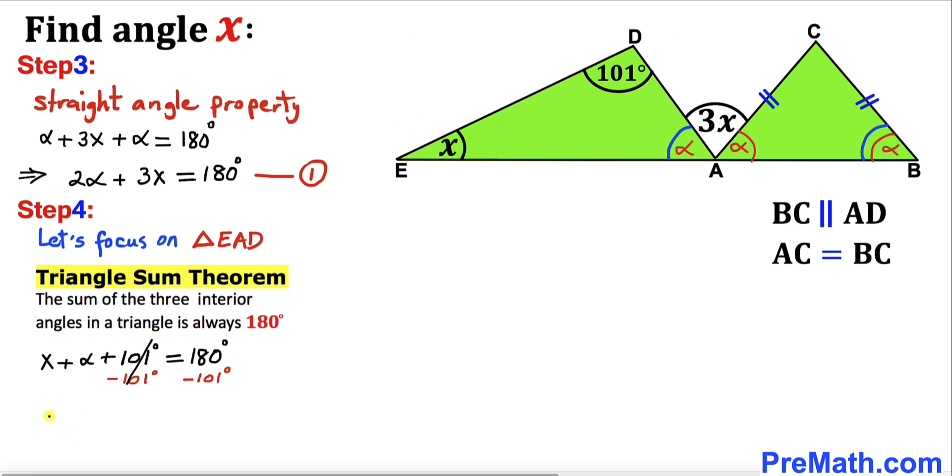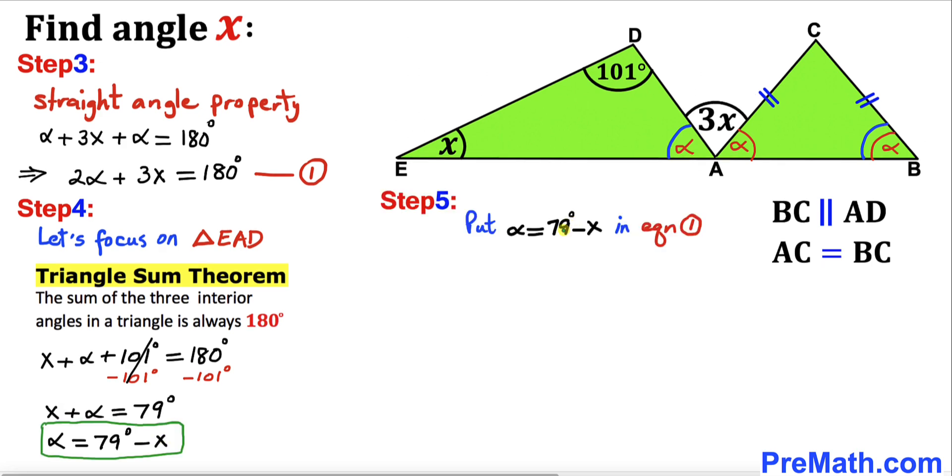Now let's move this x to the right hand side, so alpha is going to be 79 degrees minus x. Here's our final step: let's put this alpha equals 79 degrees minus x into equation one.